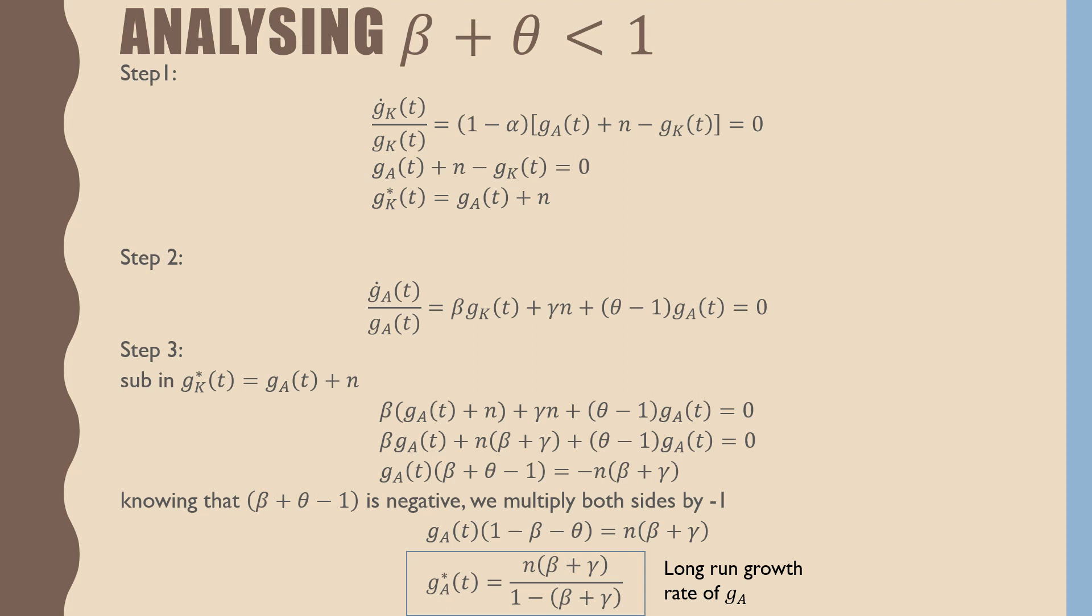Our second step is that we're going to take our growth rate transition equation for technology and also set it equal to zero. But this time, we're going to sub in our G of K star that we got from step number one. Just going through a little bit of algebra, we should come to this long run growth rate value, which is equal to N times beta plus gamma all over one minus beta plus gamma.